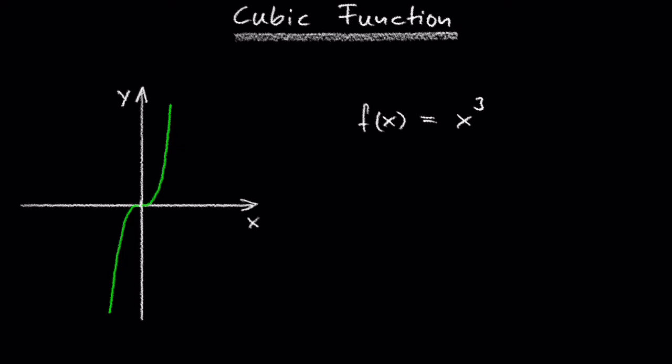When we look at the graph of the cubic function, this means that the horizontal extent of the graph is the whole real number line.